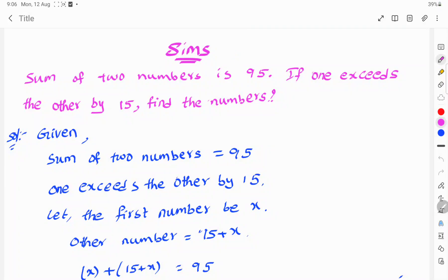Welcome to CIMISI. Today's topic: sum of two numbers is 95. If one exceeds the other by 15, find the numbers.